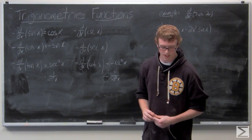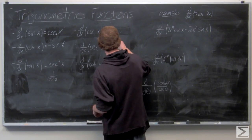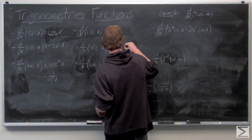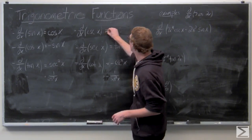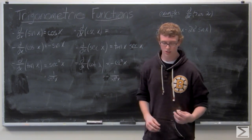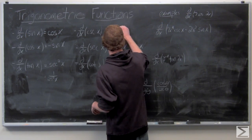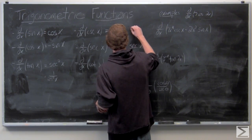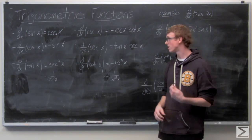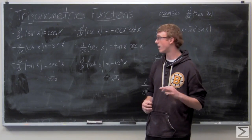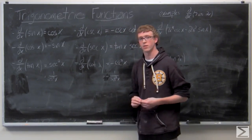You can see cotangent and tangent sort of working together. Moving on to secant of X — the derivative of that is tangent of X times secant of X. And the derivative of cosecant is negative cosecant times cotangent. So these pairs — sine/cosine, tan/cot, sec/csc — each sort of work in tandem with one another.